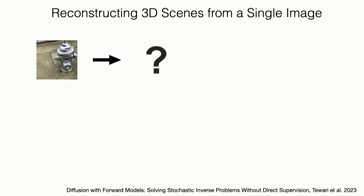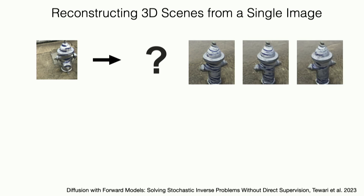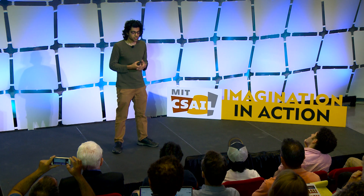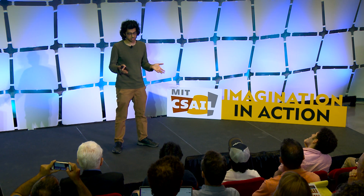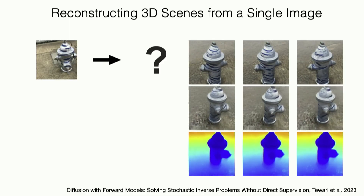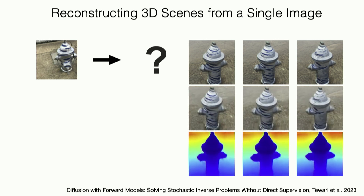In computer vision, we are interested in more human-like understanding. Take this image of a fire hydrant — just from the single image, can you think about what this hydrant would look like from the back? It could possibly look like this, maybe this, or maybe this. The paint is different in all cases, but the geometry looks about right. We know what the hydrant could look like from the back — not exactly, but we know the distribution over possible solutions. In a recent paper, we developed a method that can also do this: given an image, it gives us a distribution over 3D scenes, enabling us to sample multiple 3D scenes that all agree with the image.